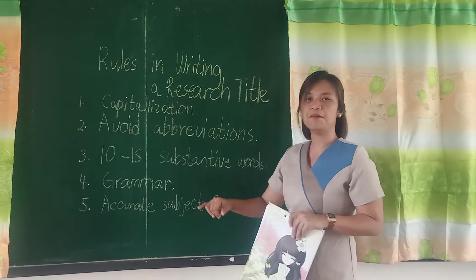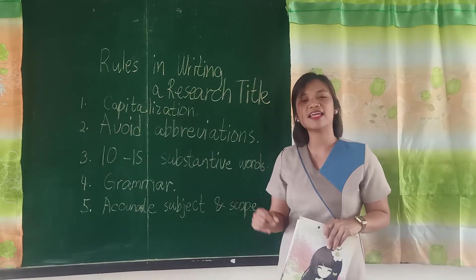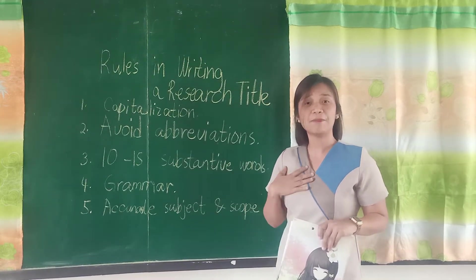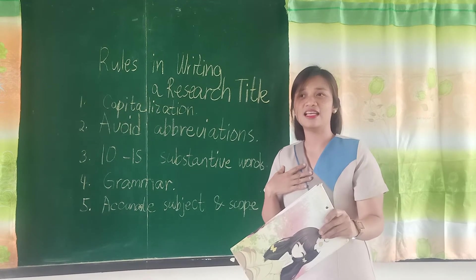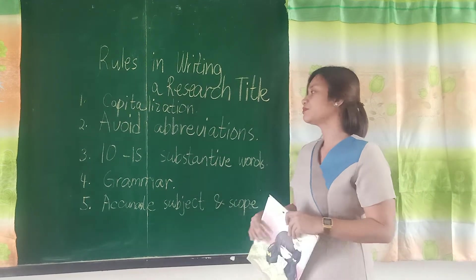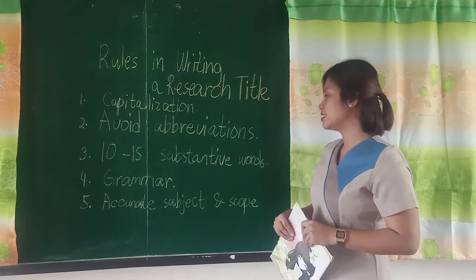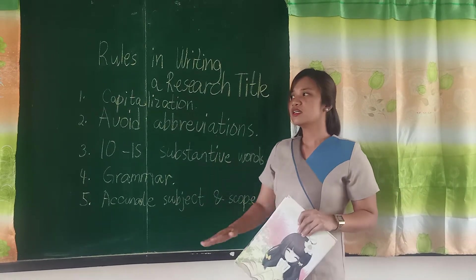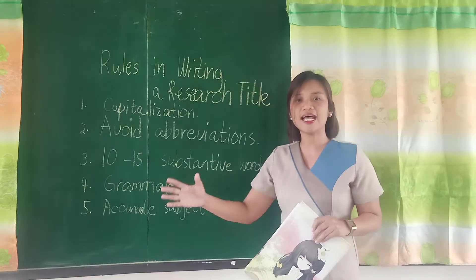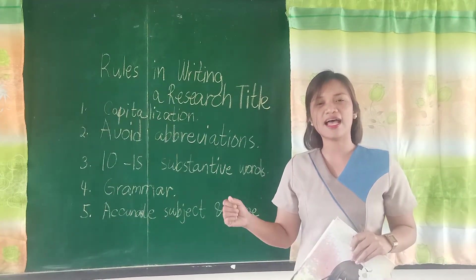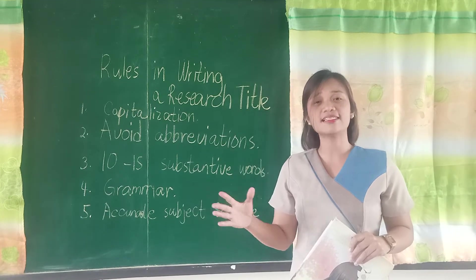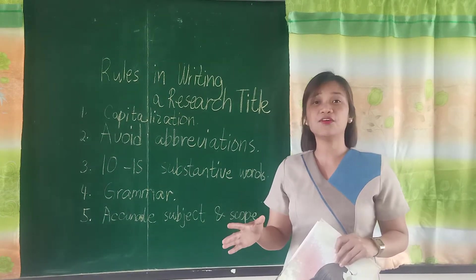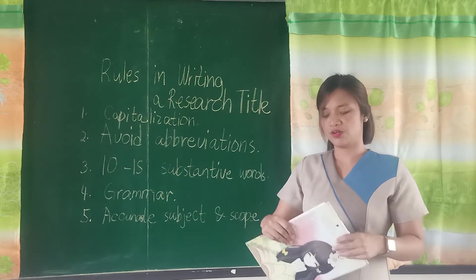Next is grammar. Of course, this is important. When we write our research title, make sure that the grammar is correct. Next is accurate subject and scope. The topic, the subject, and the variables should be clearly laid out in our title — we must not forget the variables.